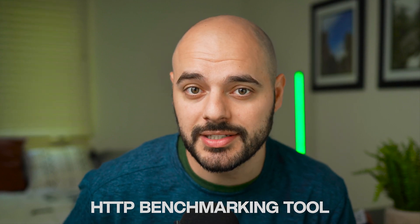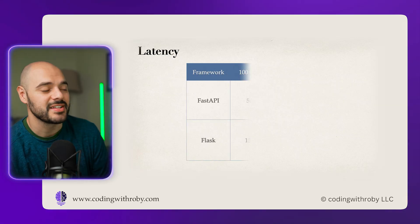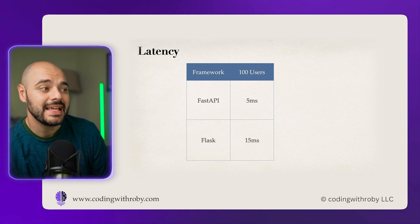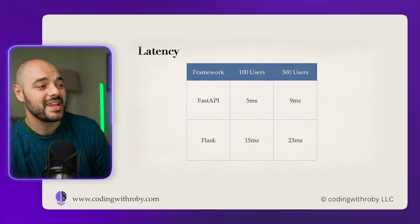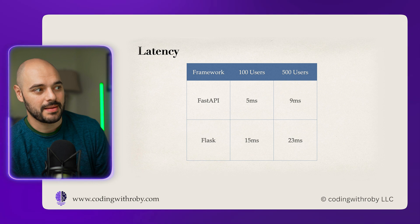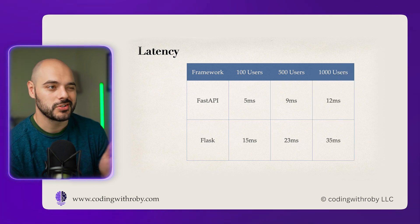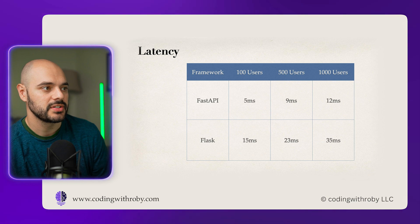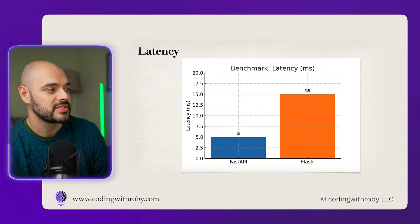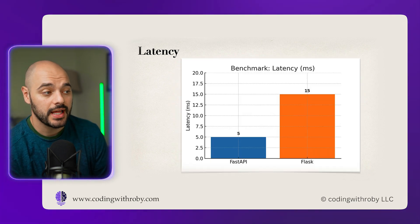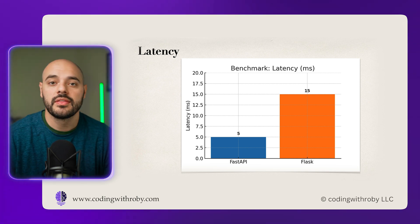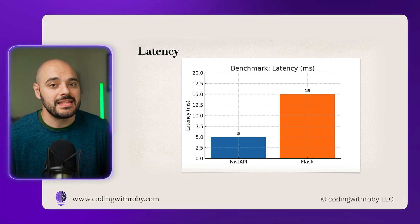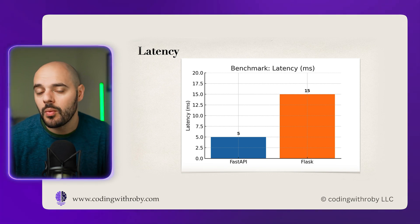The goal was simple: to simulate a typical API workload using concurrent requests. I used WRK as an HTTP benchmarking tool to get these results. Looking at latency, FastAPI latency was three times faster than Flask for the same workload — slightly less than three times faster for 500 users and almost three times faster again for 1,000 concurrent users. The overall winner for performance in this benchmarking toolset was FastAPI.